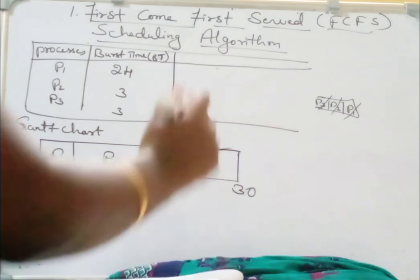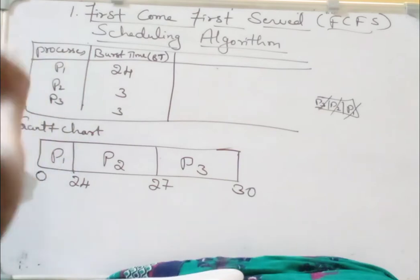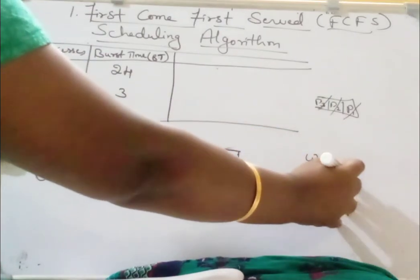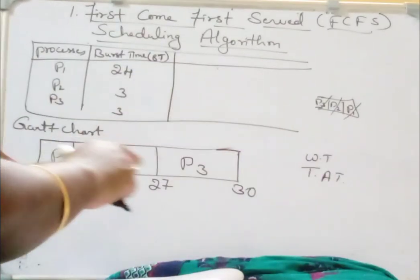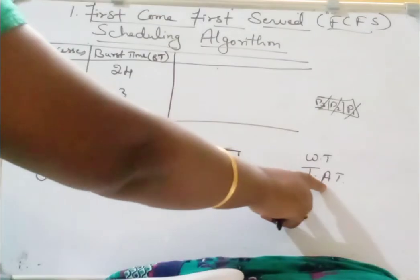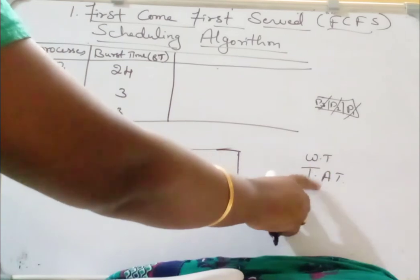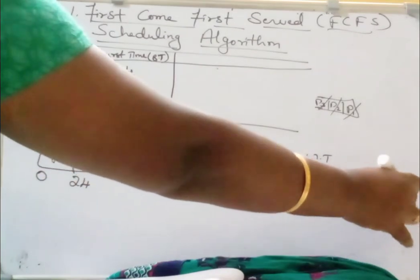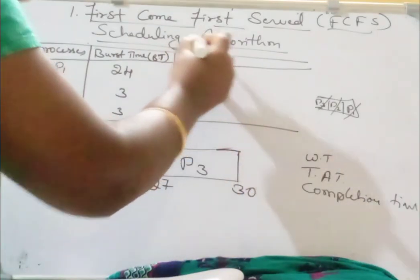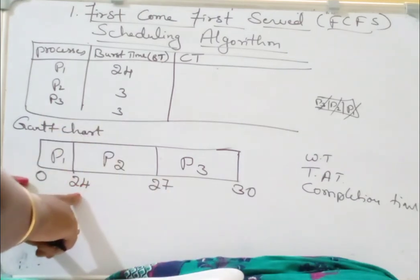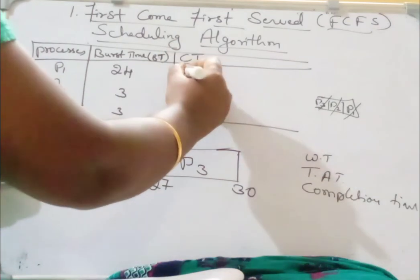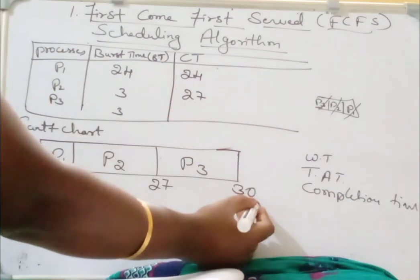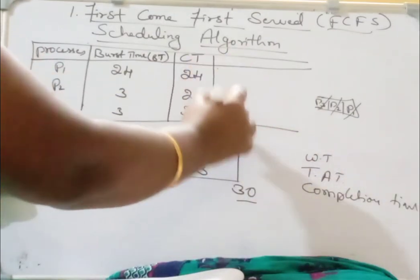Next, we calculate the turnaround time and the waiting time of these processes. Waiting time means how long the processes have been waiting in the queue for the CPU. Turnaround time means the time from submission of a process into the ready queue till its complete execution — that is completion time minus arrival time. Completion time for P1 is 24 milliseconds, for P2 it is 27, and for P3 it is 30.